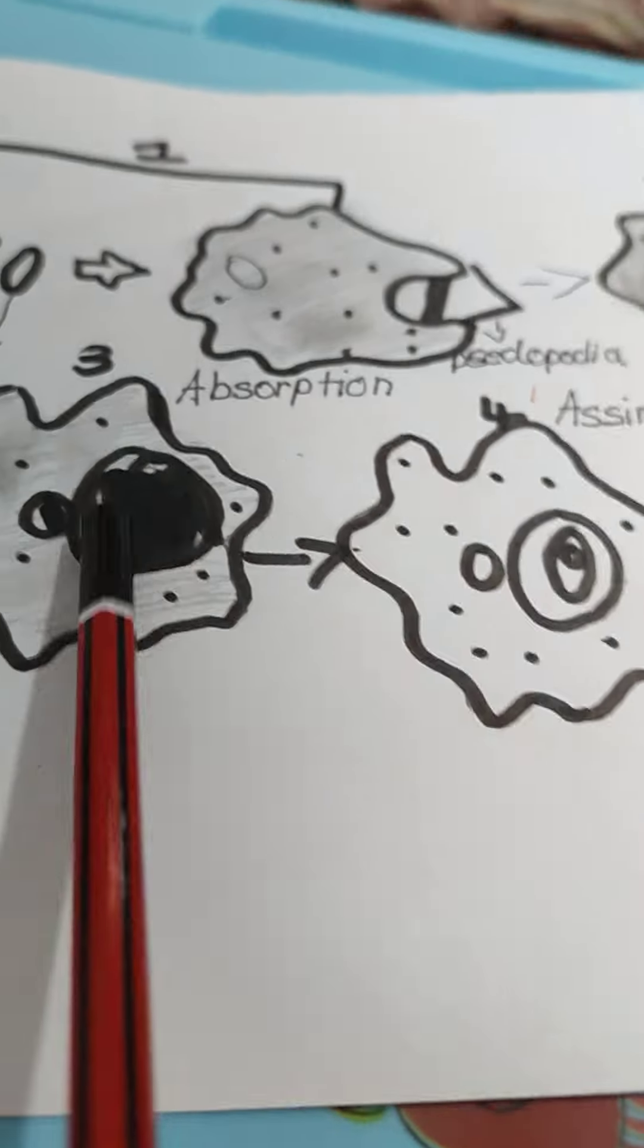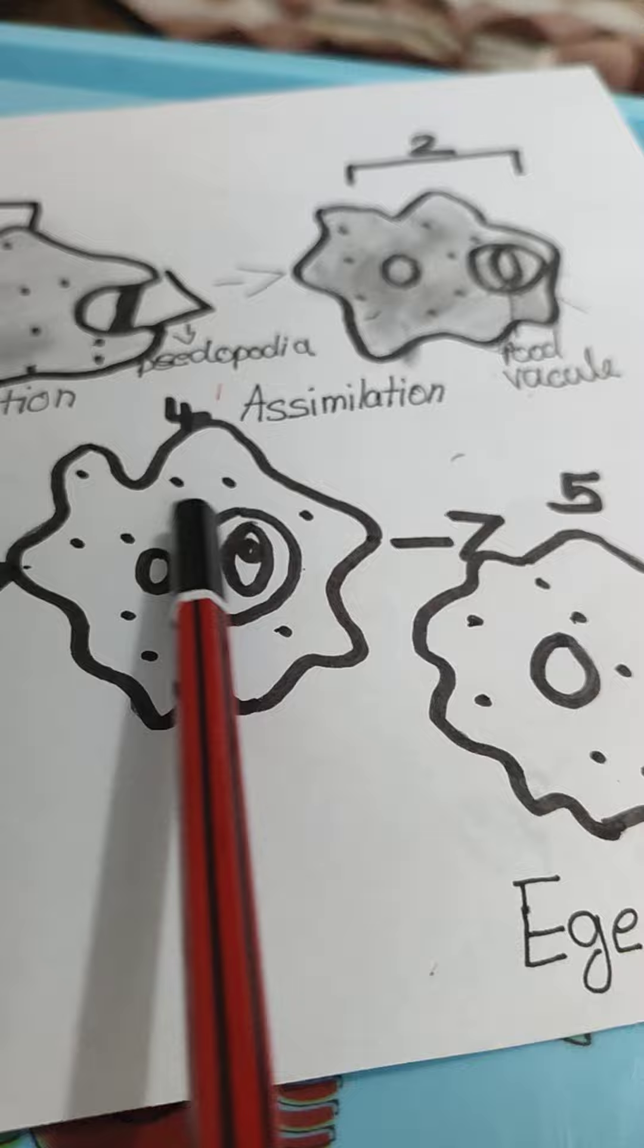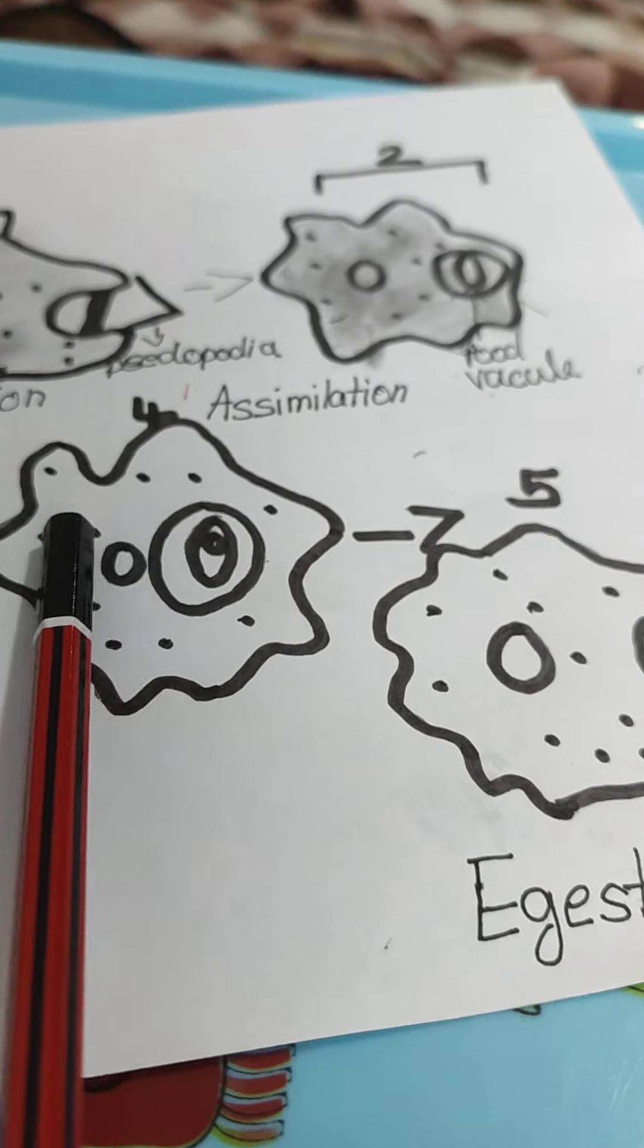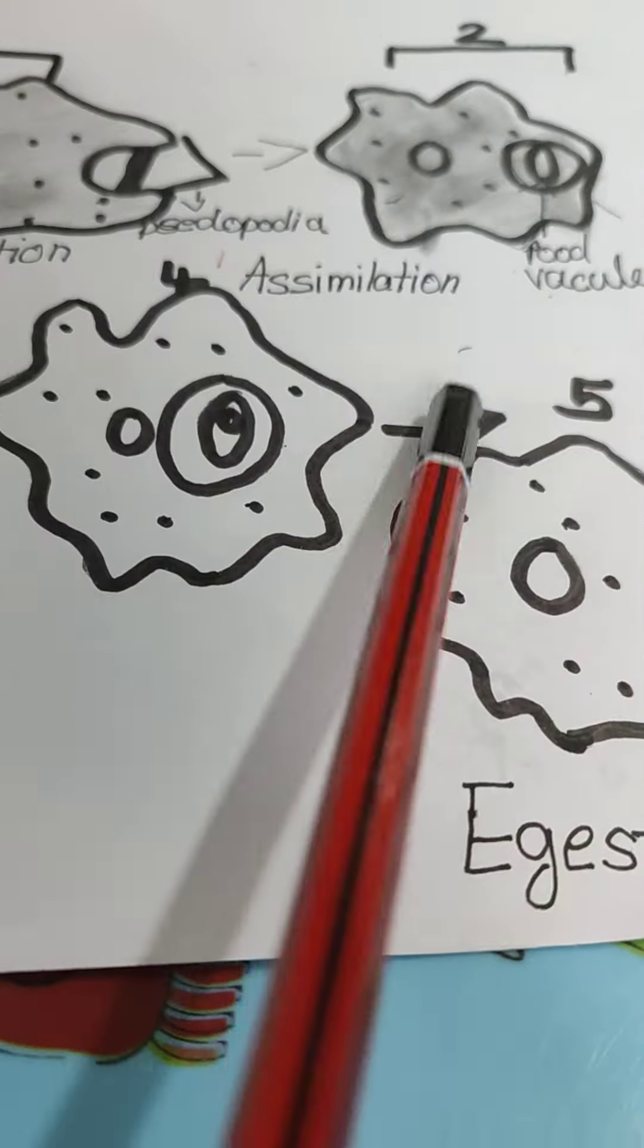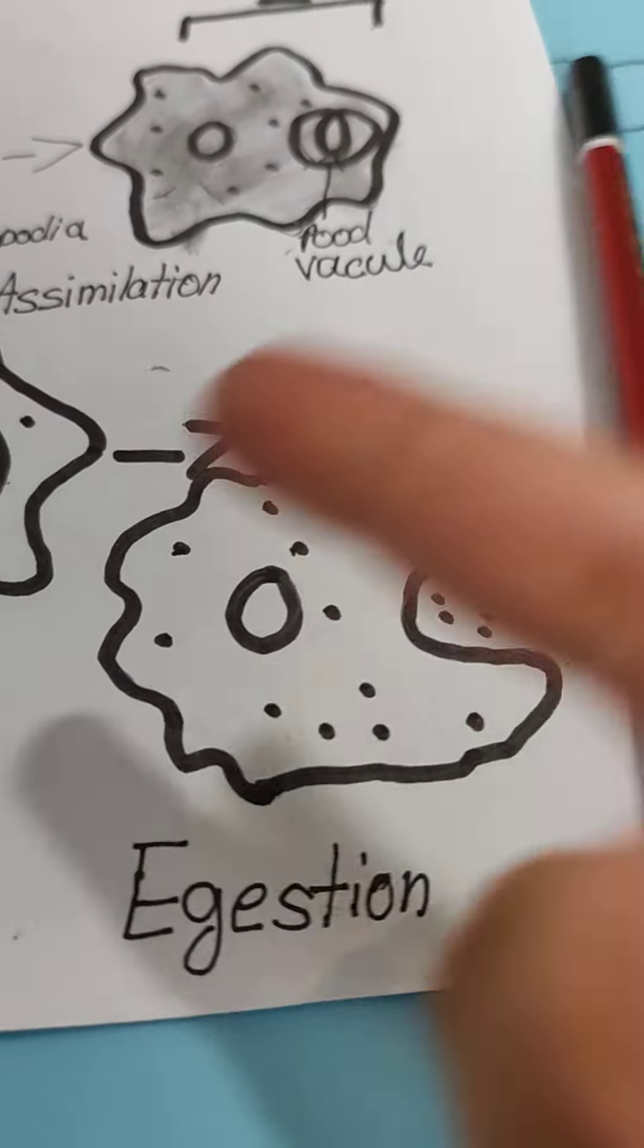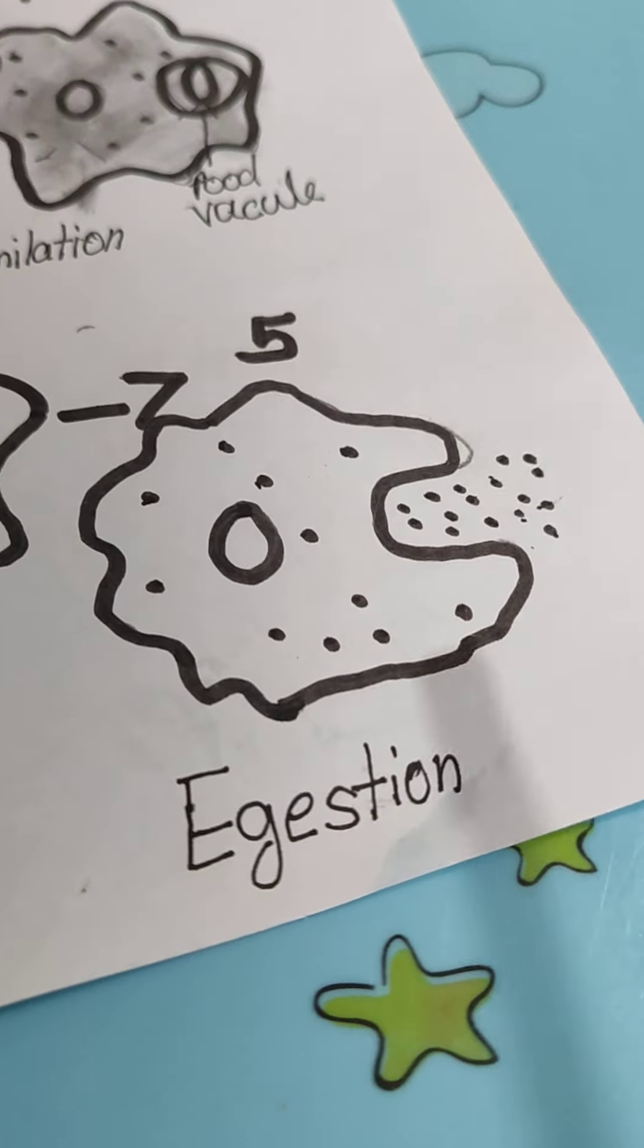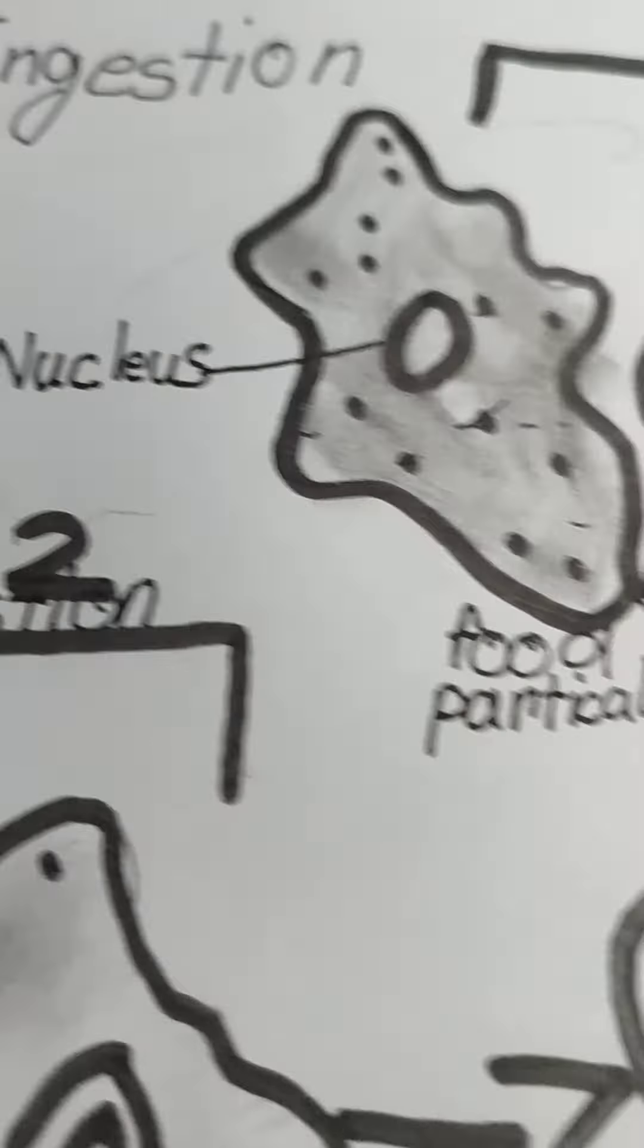You can see how big the food was. Now assimilation—it is absorbing nutrients for growth and utilization. Now egestion—it will open its finger-like projections called pseudopodia and throw out the waste food. Thank you.